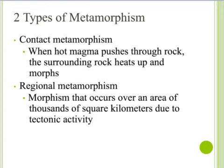The second type is regional metamorphism. This metamorphism occurs over thousands of square kilometers due to tectonic activity. An example would be two tectonic plates colliding. This could form a whole mountain range, and the whole mountain range would be part of the regional metamorphism.